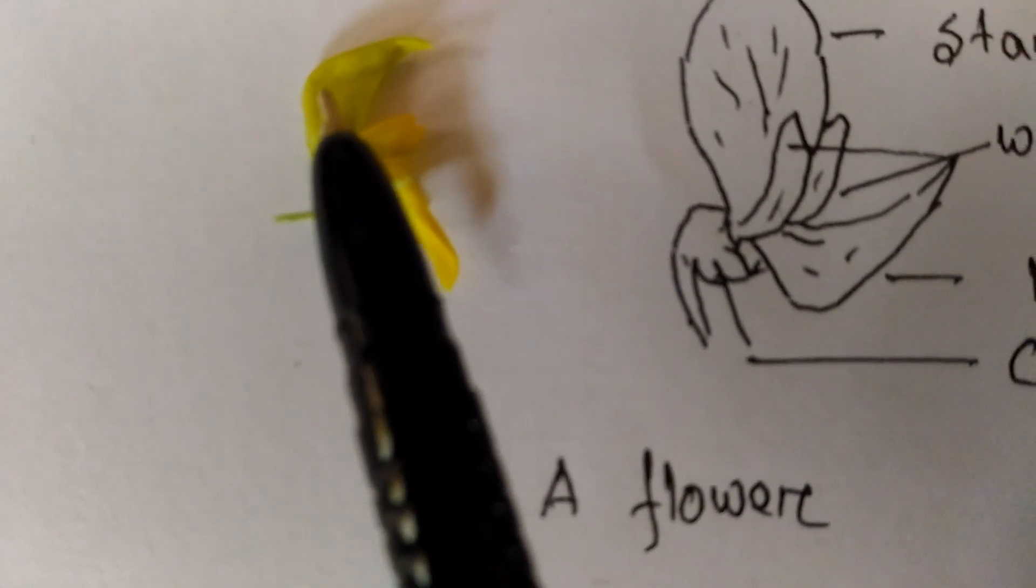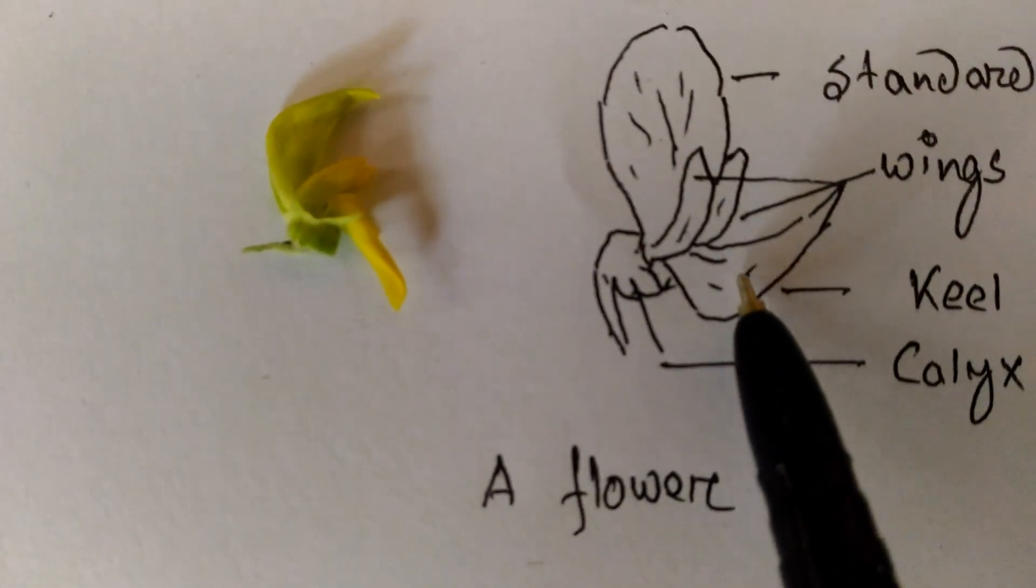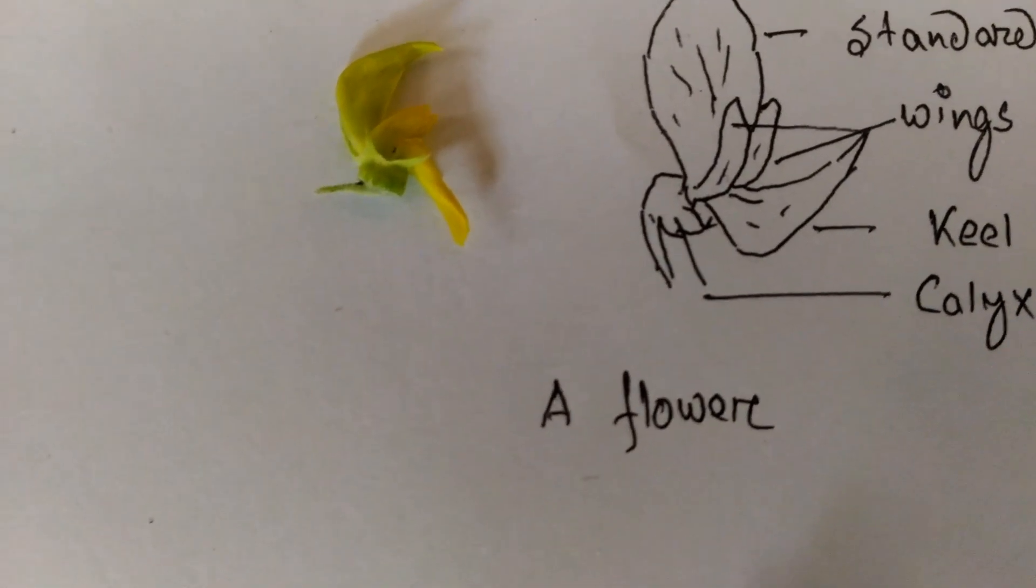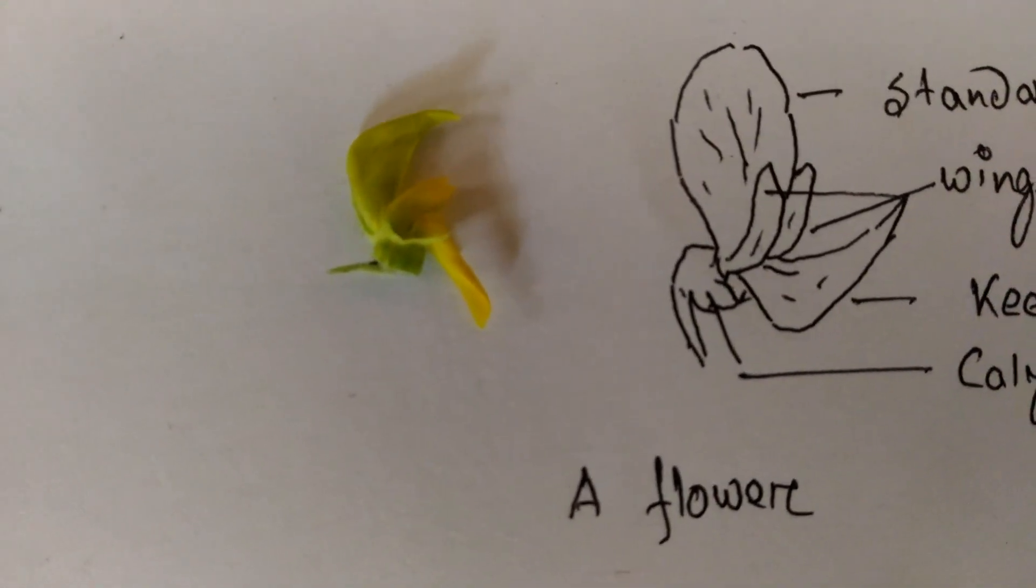The flower is papillionaceous as it has standard, two wings, and innermost two keels.